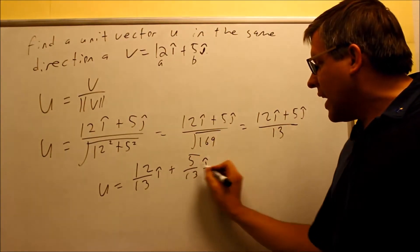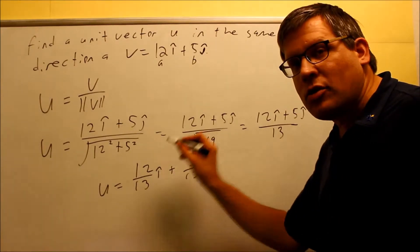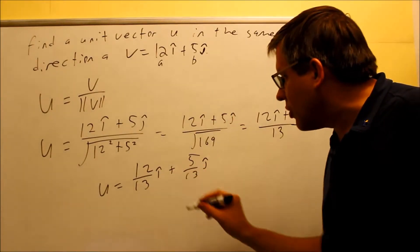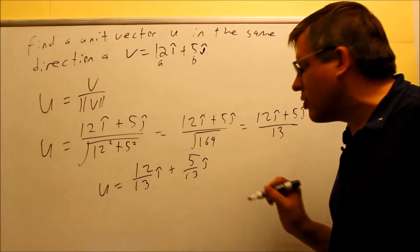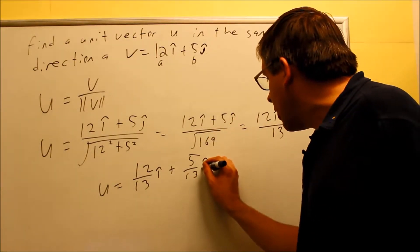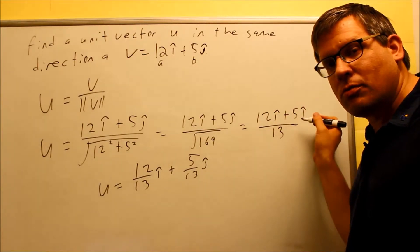And you can either write the I and J's out like this or if you want to put them on top and do 12I, all that divided by 13, and 5J, all that divided by 13, you can do that as well. But you need to make sure the most important thing is breaking up this into components.